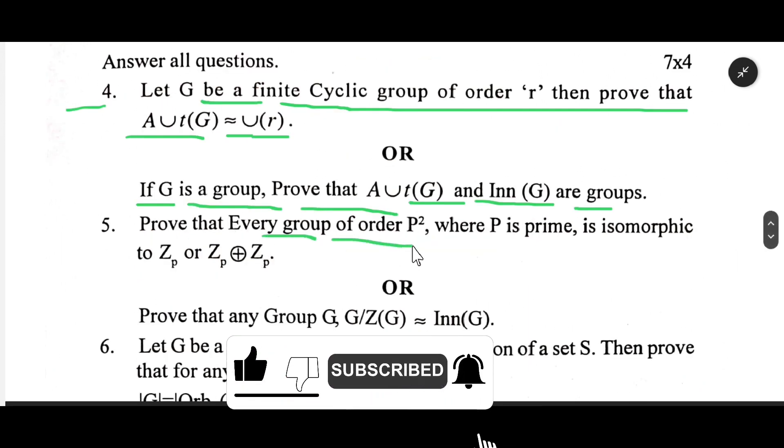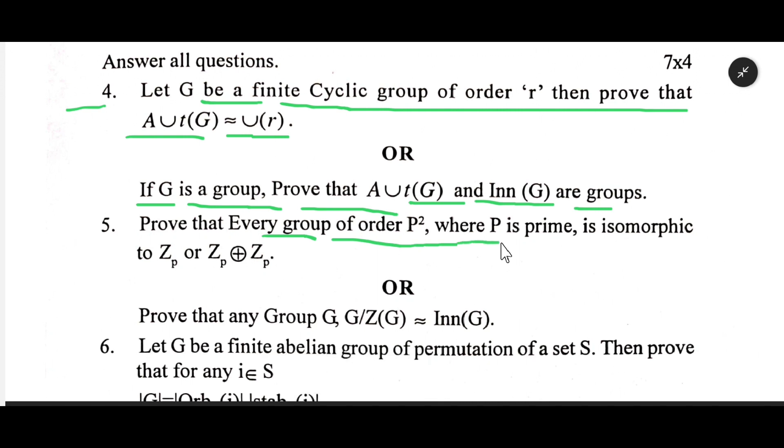Prove that every group of order p² where p is prime is isomorphic to Zₚ or Zₚ ⊕ Zₚ.